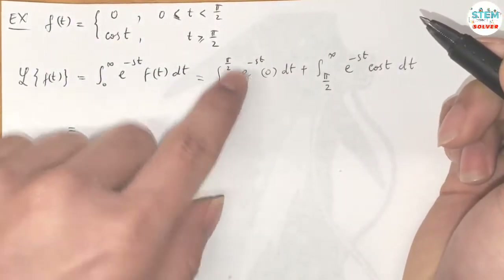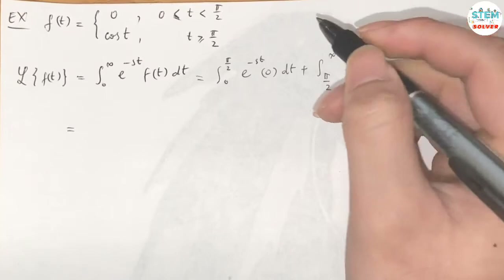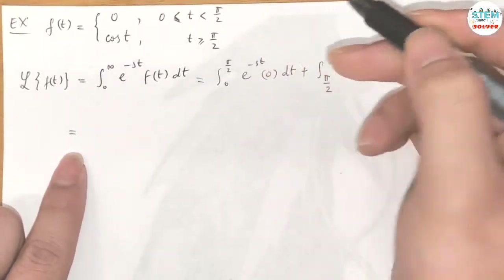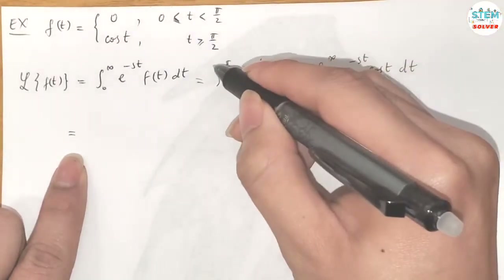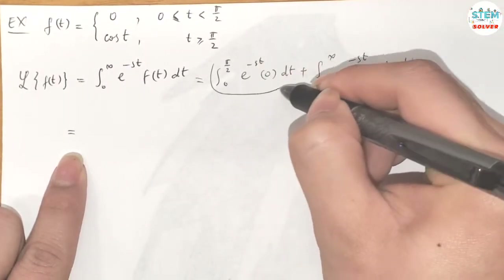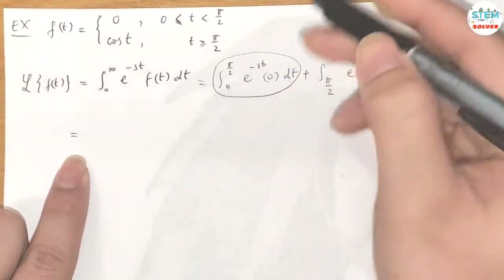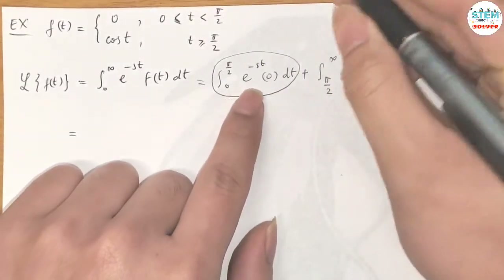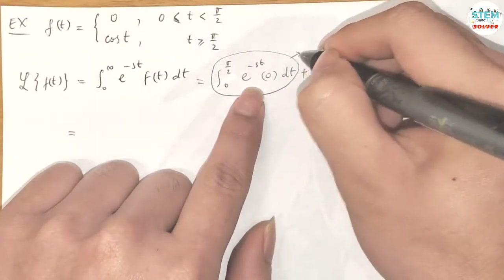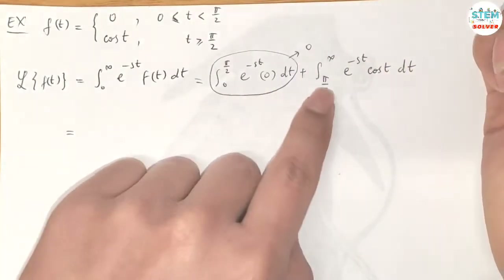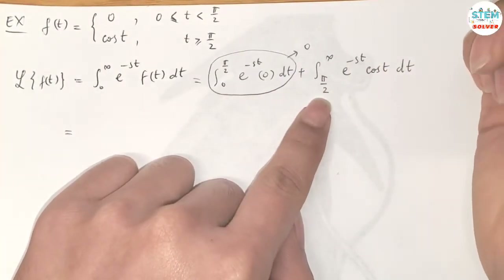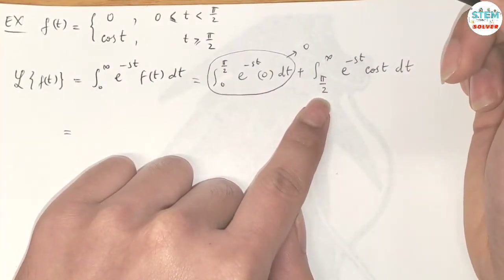For the first integral, the integrand is just 0, so the integral of 0 is 0. For the second integral, we have an improper integral.